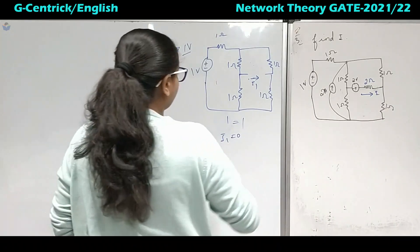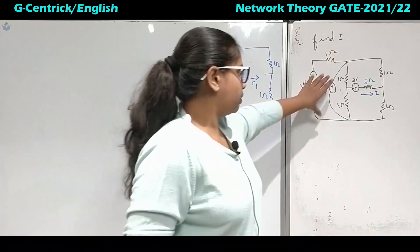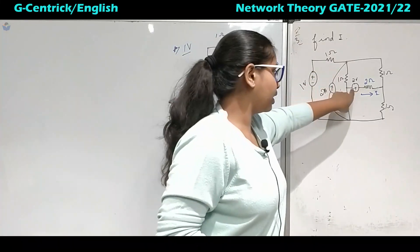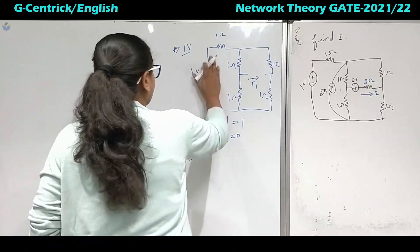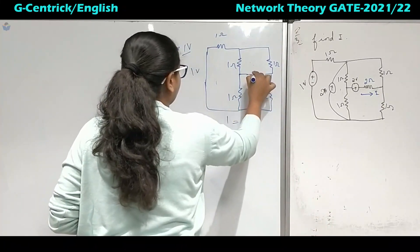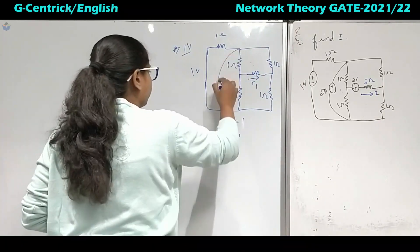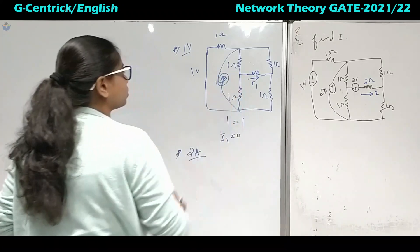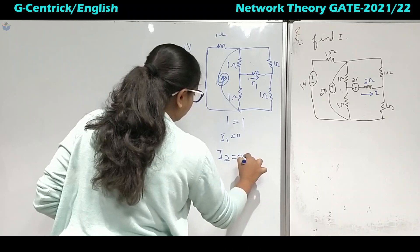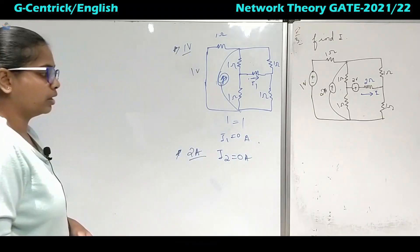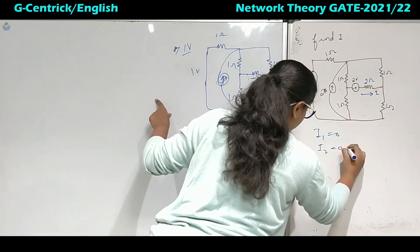Now keeping the 2 ampere source active, the 1 volt source is short circuited. Again the same circuit topology applies and the Wheatstone bridge condition is satisfied, so I2 = 0 amperes.